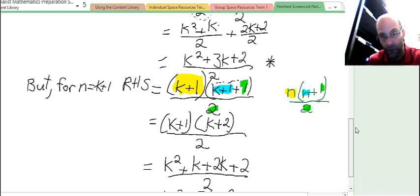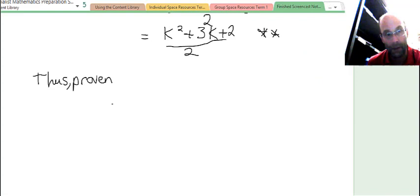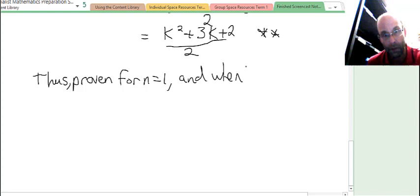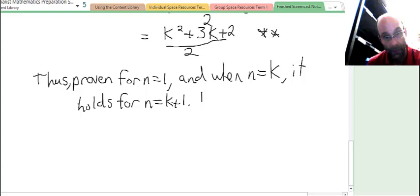Compare it to single asterisk there. K squared plus 3k plus 2 over 2, k squared plus 3k plus 2 over 2. Thus it's proven for base case or n equals 1, and when n equals k, any random domino remember the domino activity, and when n equals k it holds for n equals k plus 1.